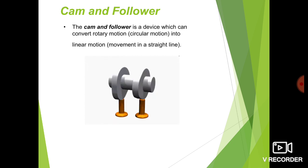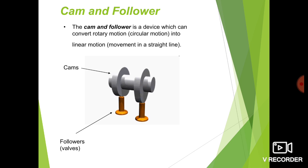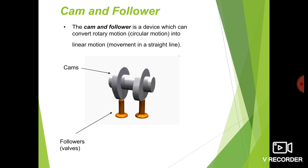Here on this screen you can see a shaft, and on that shaft there are two cams which are mounted. The shaft is rotating with uniform velocity, which means the cam will also rotate with uniform velocity. In connection with the cam there are two followers. The followers are always in contact with the cam through spring action. So as the cam rotates, the follower reciprocates. This is the function of cam and follower.